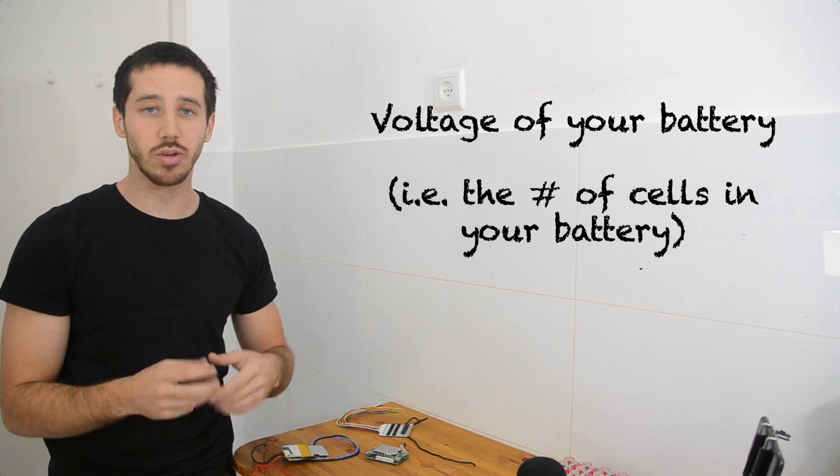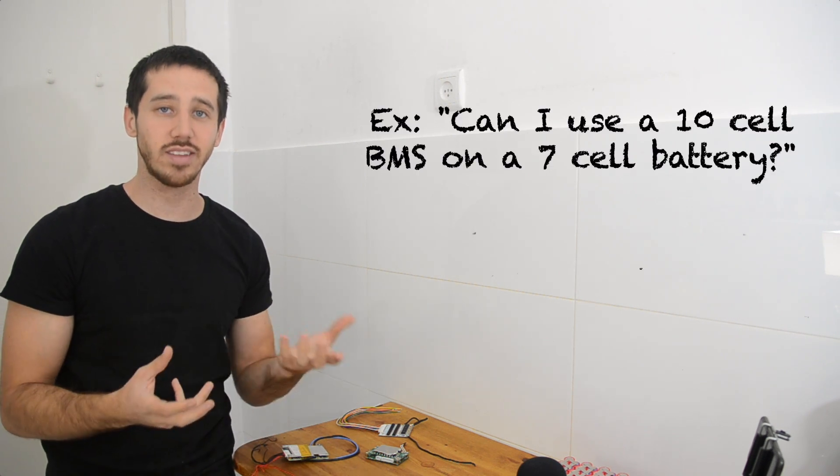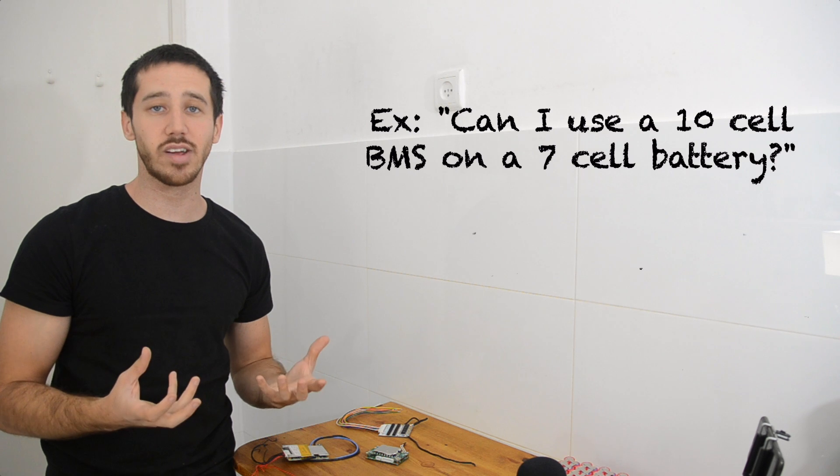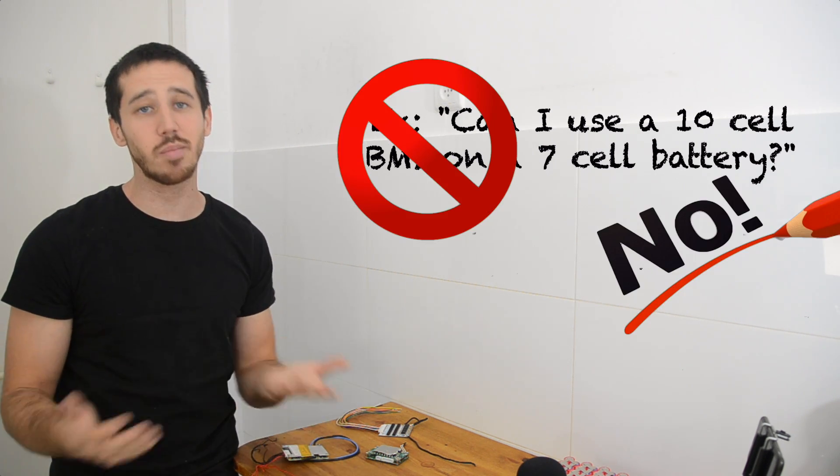Now when it comes to choosing your BMS, there are a couple main parameters. First is the voltage, or the number of cells. You need to match this exactly. This is a question I get all the time. Can I use a 10S or 10-cell BMS on a 7-cell battery and just not connect the last three cells? It's not going to work for a number of reasons, but the first one being that when the BMS doesn't recognize the correct voltage, it's not going to allow your battery to supply any current. So you need to match the correct number of cells in the BMS to the number of cells in your battery.